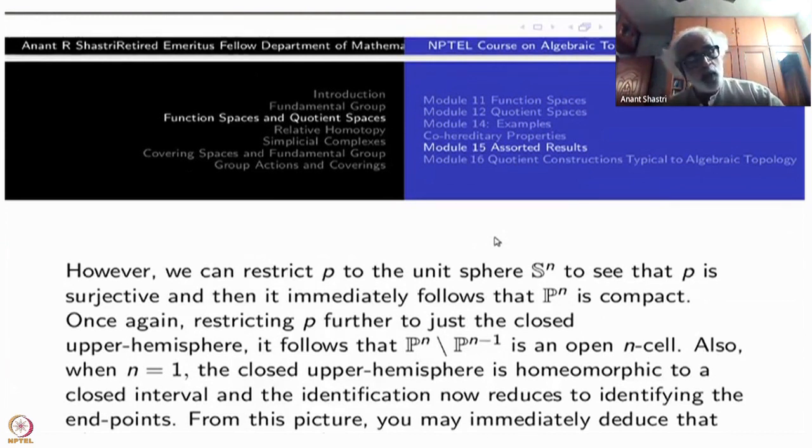But the equator is one dimensional lower sphere and the identification is again antipodal. Therefore, what you get on the equator is P^(n-1). The rest of the open cell which is the upper hemisphere, strictly upper hemisphere actually remains as it is attached to the P^(n-1). So that is an open cell because there the map is injective. This description will be very very helpful in understanding the projective space inductively.